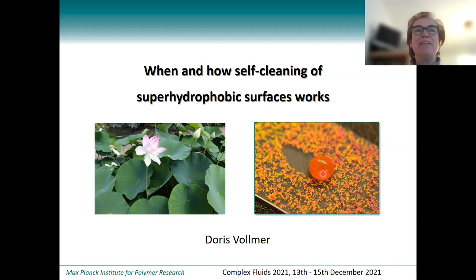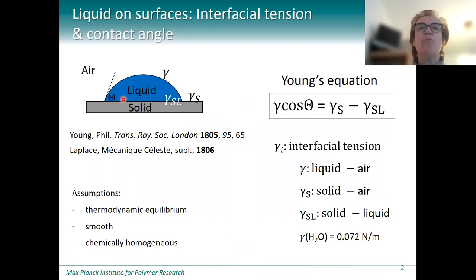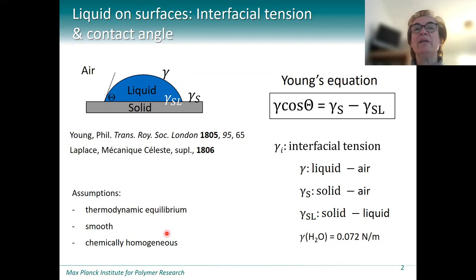To gain deeper insight into self-cleaning, I'd like to discuss relevant aspects of wetting, including what determines how easily a droplet rolls over a surface. The fundamentals of wetting go back to Thomas Young. He realized that the angle a droplet forms with the surface depends on the difference of the interfacial tension between the solid and air and solid and liquid, divided by the interfacial tension between liquid and air. However, this only holds in thermodynamic equilibrium and for ideally smooth and chemically homogeneous surfaces.